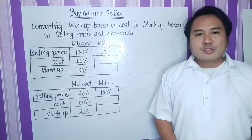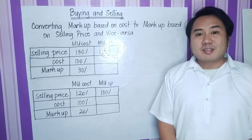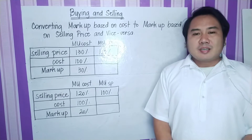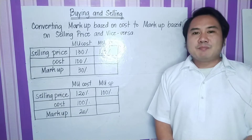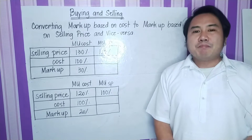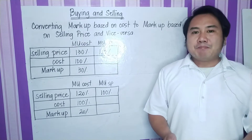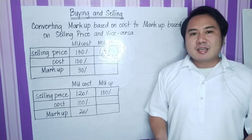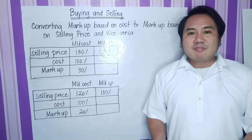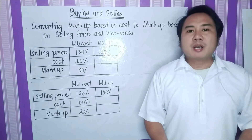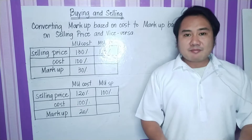Converting markup based on cost to markup based on selling price and vice versa. From our previous lecture, markup can be based both on cost and on selling price. In this case, if markup based on cost is given, how are we going to convert it to markup based on selling price, and vice versa?